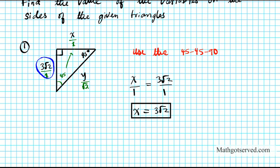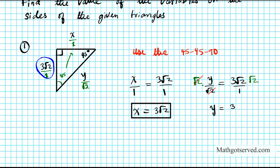To find y, I set y over root 2 equal to 3 root 2 over 1. Multiplying both sides by root 2, the root 2 cancels on the left and on the right root 2 times root 2 equals the square root of 4, which is 2. So y equals 3 times 2, which is 6. Therefore x equals 3 root 2 and y equals 6.